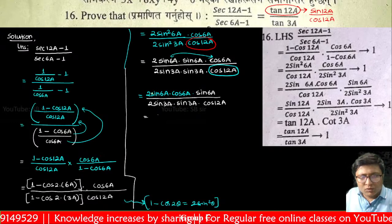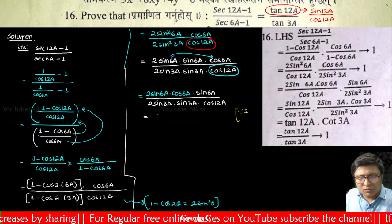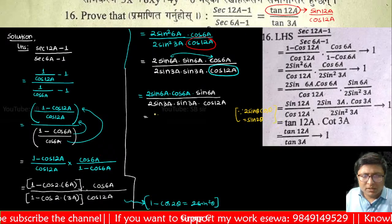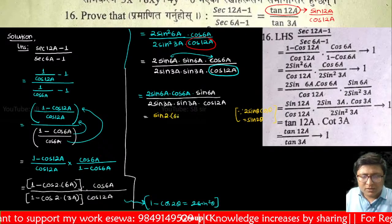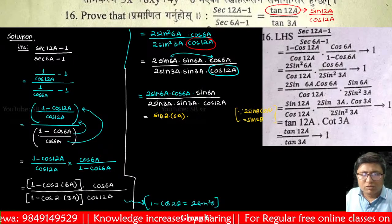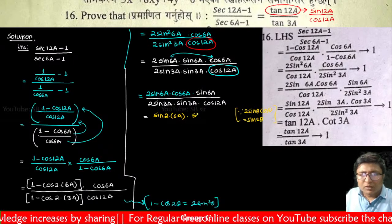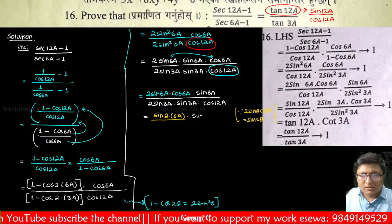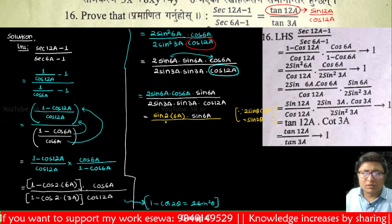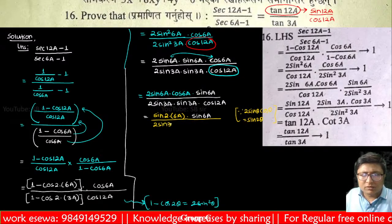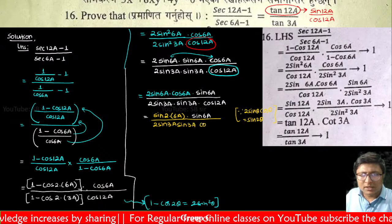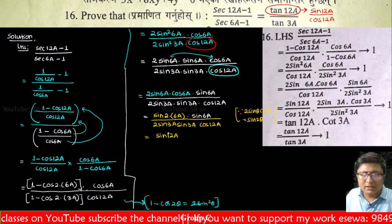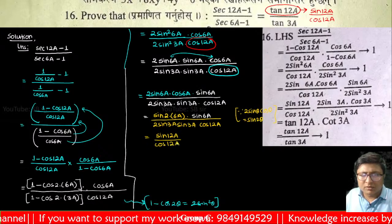Using 2 sin θ cos θ equals sin 2θ, we get sin 2 into 6a over sin 2 into 3a, which is sin 12a over sin 6a. We also have the cos 2a terms simplifying. So we get sin 2a upon sin 3a with the cos factors giving tan form.